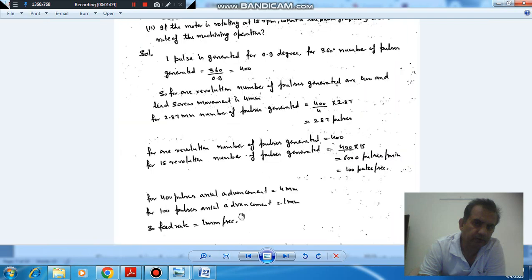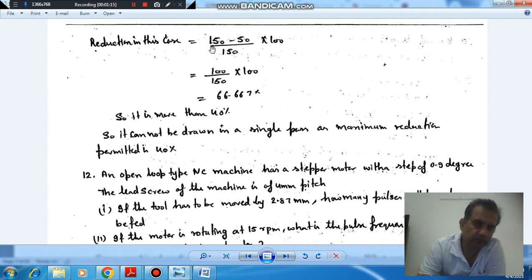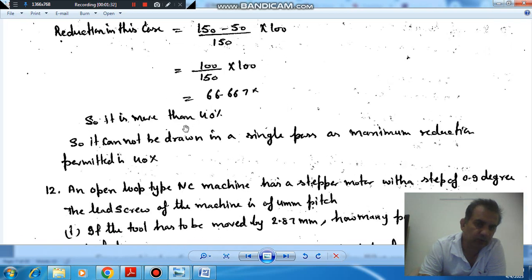Now, if the reduction in this case where blank diameter is 150 and cup diameter is 50, the reduction is 150 minus 50. The percentage reduction is 66.667%. But in a single draw, only 40% reduction is permitted and this is coming out as 66.67%.